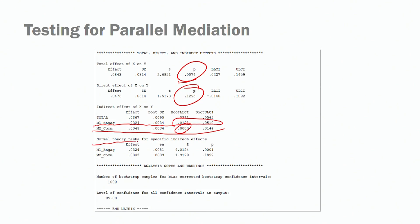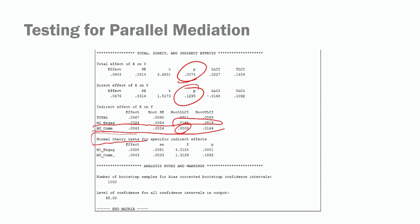Looking at the normal theory tests: the Sobel test is significant for engagement, but not significant for commitment. This is provided for additional information, but you no longer need to report Sobel tests in your paper, because we know that Sobel tests violate the assumption that the indirect effect distribution should be normal — and we know that it is not.